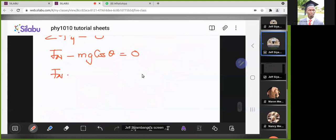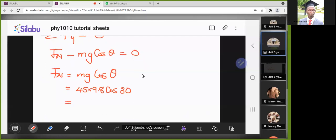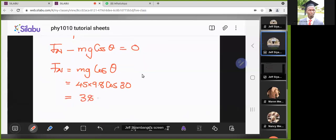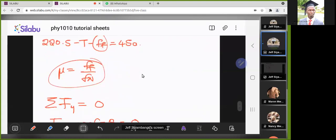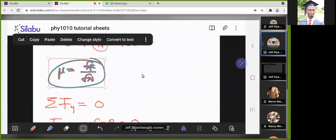Based on that we can simplify this. We see that the normal force becomes equal to mg cos theta. The mass is 45, g is 9.8, then cos 30. So if we do the math here, we have 45 times 9.8 times cos 30. So this is our normal force.